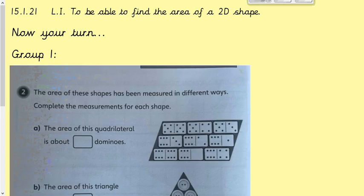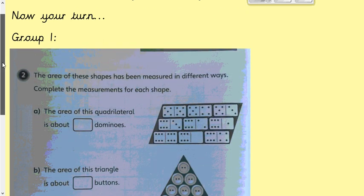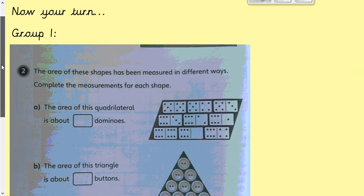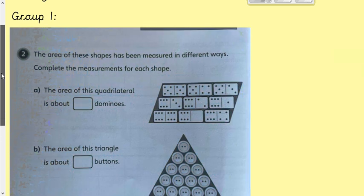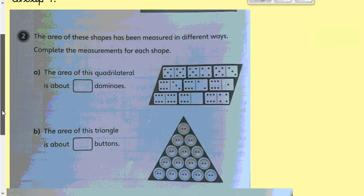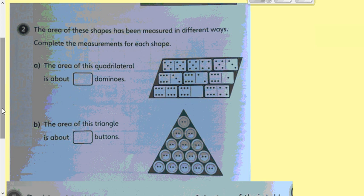Now it's your independent learning time. I have two groups as usual — Group One and Group Two. If you want the PDF version it is on Microsoft Teams. Spend about 20 minutes on them; there aren't too many questions today so you might finish earlier — that's fine, just come back and we'll go through the answers together. This is the first question for Group One — pause the video if you want.